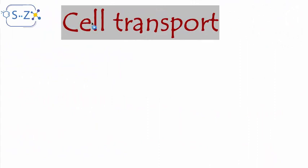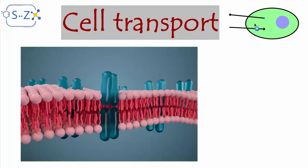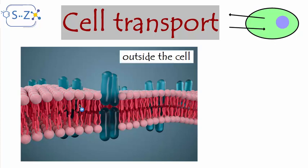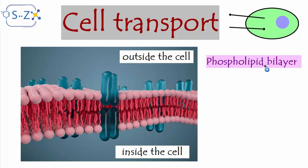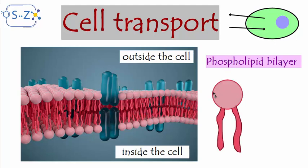In order to keep this homeostasis, there is what we call cell transport. Cell transport is the movement of substances into and outside the cell, and this is controlled by a very important organelle in the cell: the plasma membrane. The plasma membrane is not just a simple layer — it is made by what we call a phospholipid bilayer. Each one of these molecules is called a phospholipid.